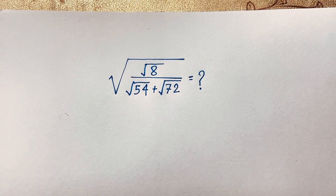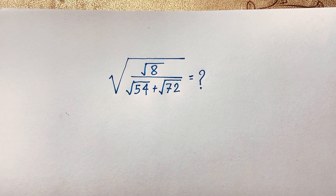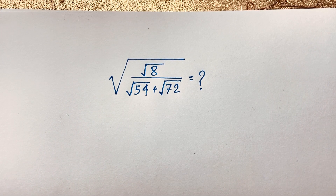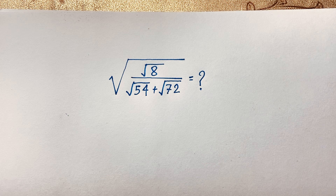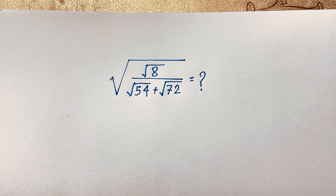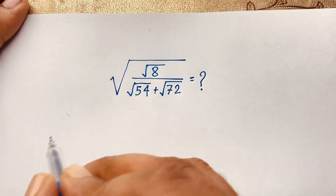Hello everyone. How to solve this radical math question: square root 8 over square root 54, plus square root 72, is equal to what? How to simplify this radical math question? Let's start the solution.